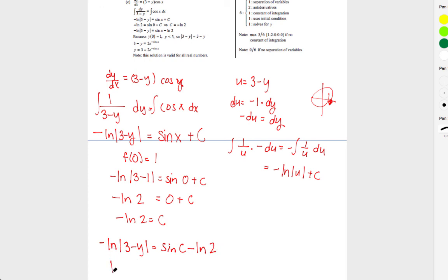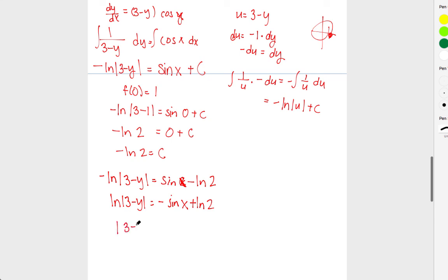So, now I'm down to negative ln 3 minus y equals sine x minus ln 2. So, I'm going to just multiply both by the negative. So, I have ln 3 minus y equals negative sine x plus ln 2. And then, we can base e both sides. So, I have absolute value of 3 minus y equals e to the negative sine x plus ln 2. Which is e to the negative sine x times e to the ln 2. Which is e to the ln 2 is just 2 e to the negative sine x. So, since f of 0 equals 1, that's a positive value. The absolute value of 3 minus y is simply 3 minus y equals 2 e to the negative sine x. Meaning, y equals 3 minus 2 e to the negative sine x. And that should be my final answer.